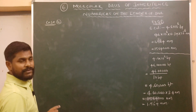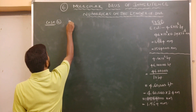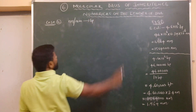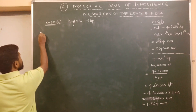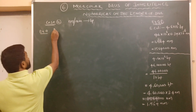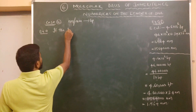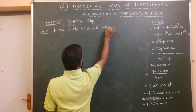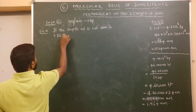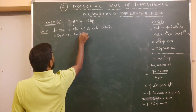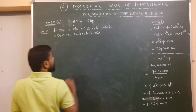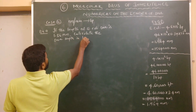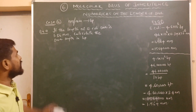Now let us come to Case 2. The problems related to Case 2 are conversion of DNA length from nanometers or millimeters into base pairs. The example question is: if the length of E. coli DNA is 1.36 millimeters, calculate the DNA length in base pairs. This is a question related to Case 2.